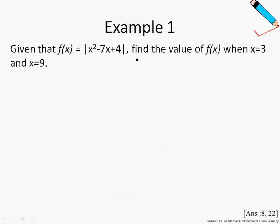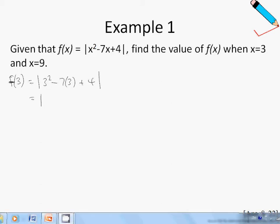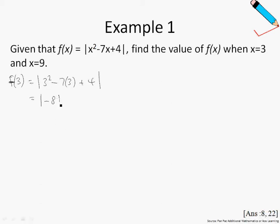Let's look at Example 1. Given that f(x) equals the modulus of x squared minus 7x plus 4, find the value of f(x) when x is 3 and when x is 9. For x equals 3, we compute f(3) equals the modulus of 3 squared minus 7 times 3 plus 4, which gives the modulus of negative 8. Since the modulus sign converts any negative number to positive, this becomes the mod of 8, which is simply 8.